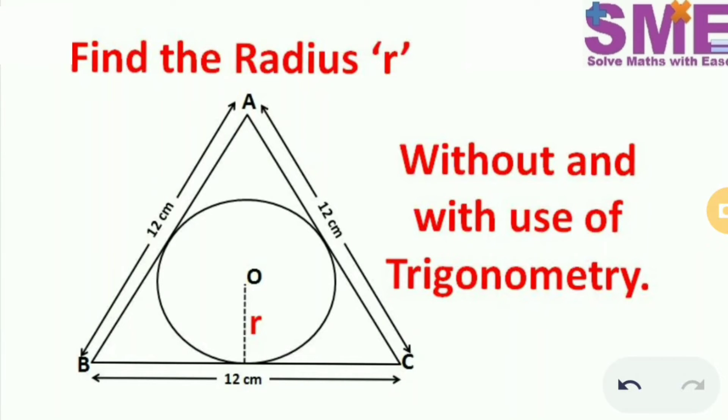Welcome to my channel Solve Maths with Ease. In this question, we have an equilateral triangle with each side as 12 cm and a circle is inscribed in this equilateral triangle.